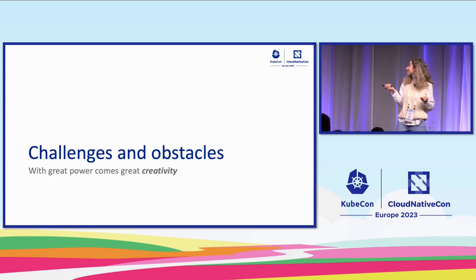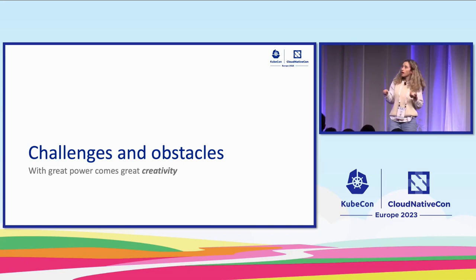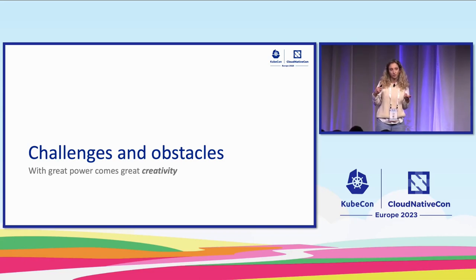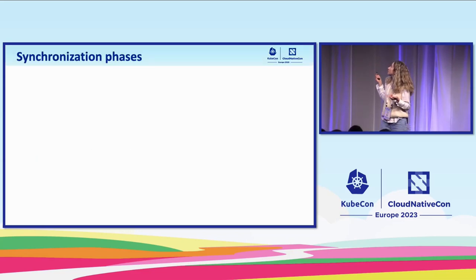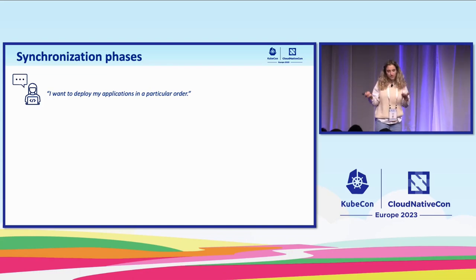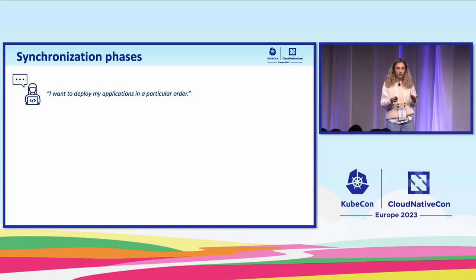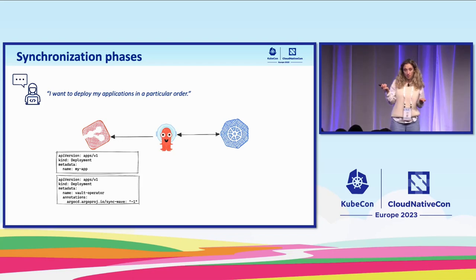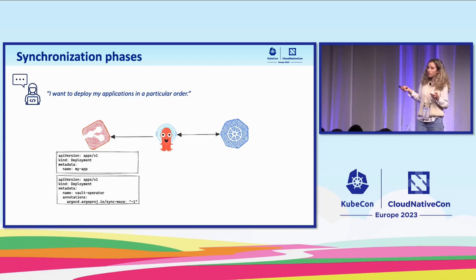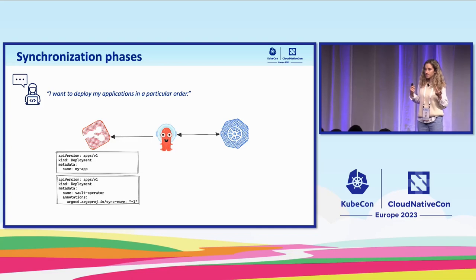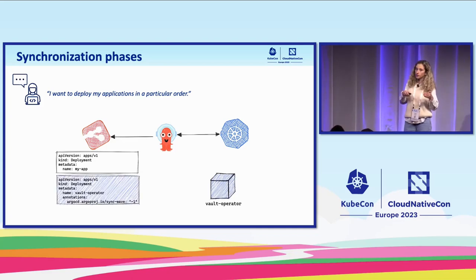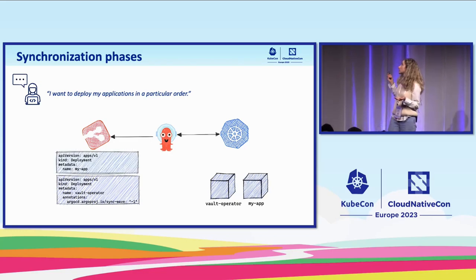Argo CD and GitOps are great tools for continuous deployment, but some things that came out of the box with tools like Spinnaker require work in Argo — and for that work we needed creative solutions. The first tip is about service dependencies. In practice, you often need to deploy applications in a particular order — infrastructure first, then the monitoring stack, secrets operator, then the application. You can do this with SyncWave. The secrets operator is marked with SyncWave minus one; the application defaults to SyncWave zero. Argo CD will deploy the secrets operator first, and when healthy, continue with the application.